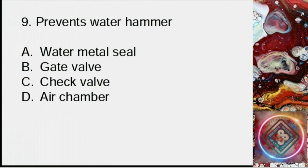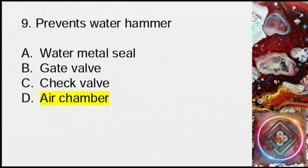Question 9: Prevents water hammer. A: Water metal seal, B: Gate valve, C: Check valve, D: Air chamber. Answer: D, air chamber.